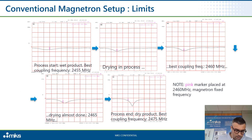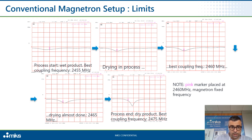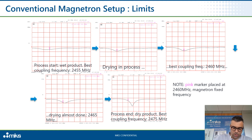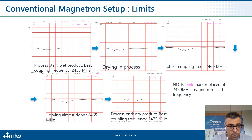So what happens with the magnetron? The magnetron emits at 2460 MHz always — it has a fixed frequency. As you can see from the marker, the pink marker is always stuck at 2460. There is just one moment when the frequency of the magnetron is matched with the frequency of the chamber. In all the other moments, we are losing efficiency.